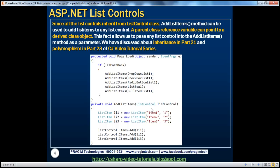If somebody asks you an interview question like 'Where can you use inheritance? Can you give me a practical example?' — you can give this example. We want to populate the list controls, and we know all list controls inherit from the ListControl base class. Rather than having different methods to populate five different controls, we have one method using the base type as parameter. We've spoken about inheritance extensively in the C# video series — a base class reference variable can actually point to a derived class object, and that fact allows us to pass in the derived class object at runtime.